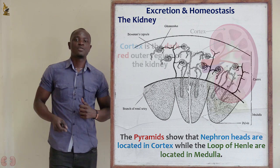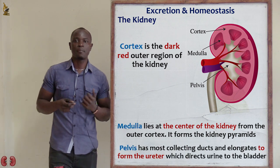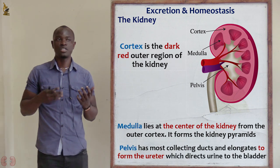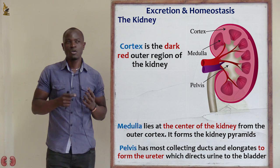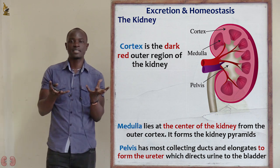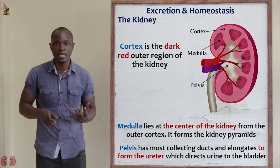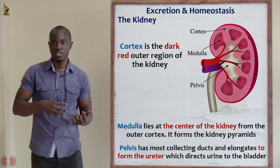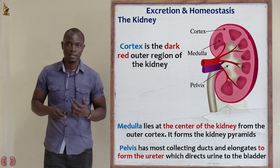Apart from that, we see that the kidney's pyramids mainly open into a swollen cavity, which is referred to as the pelvis — the next region of the kidney.